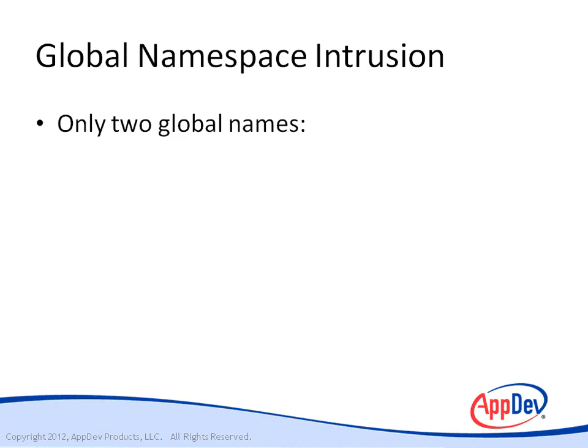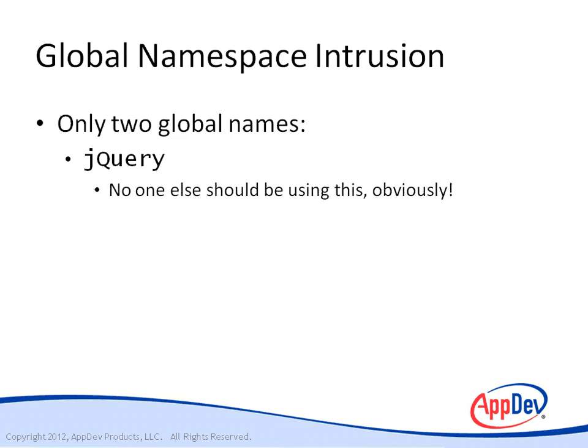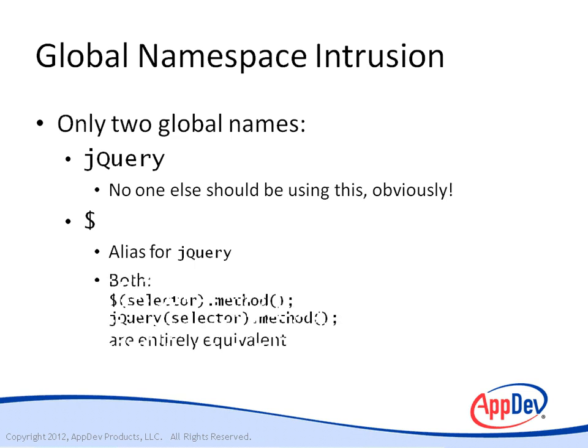jQuery adds just two names to the global namespace: jQuery and dollar sign. jQuery is obvious and certainly not a name anyone else should be using, so the possibility of a collision is pretty much nil. The dollar sign is simply a shorthand alias for the name jQuery and just helps keep code as terse as possible. Either name can be used to refer to the jQuery function and they can be used interchangeably.